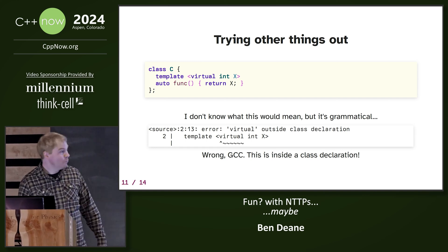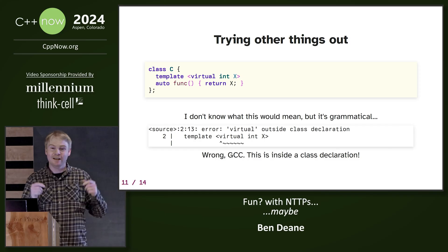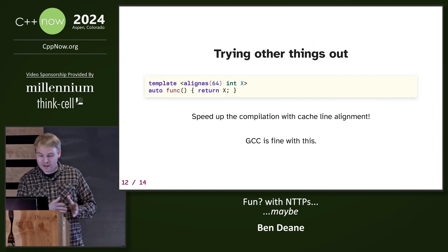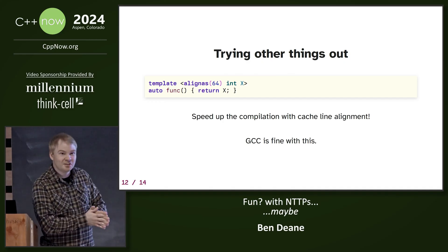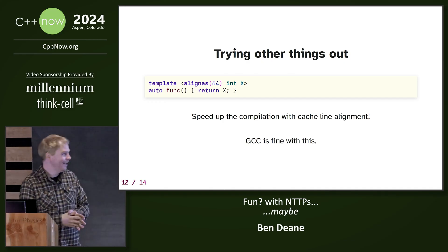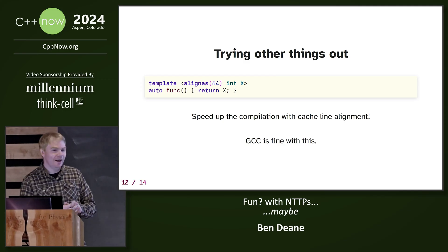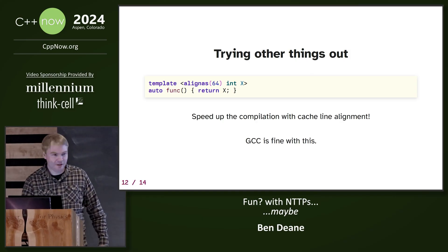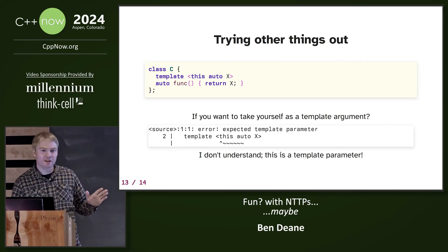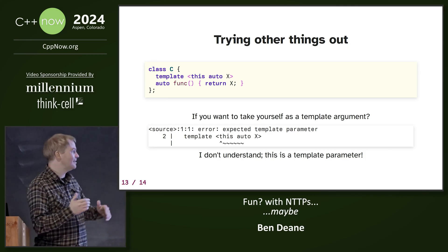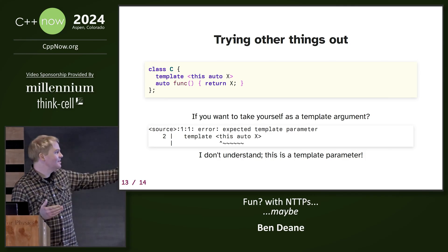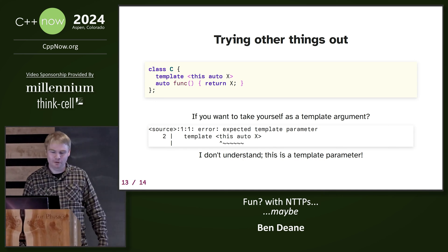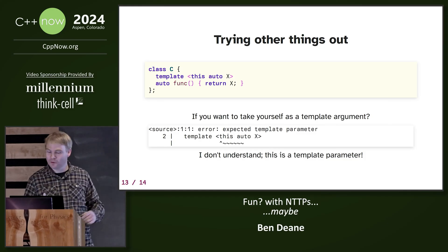Let's try some other things. Wherever you can put an attribute, in the attribute grammar production, you can put alignas. So I recommend cache-aligning all your NTTPs for faster compile times. And of course, you know there's something else coming up now. I don't know what this means either, but in C++23, we could do this. And this is totally a template parameter — what else would it be? It's there. I don't know what it would mean. If anyone knows what it would mean, tell the compilers.